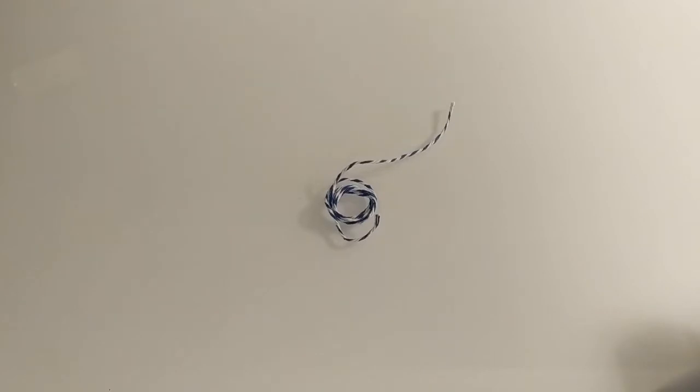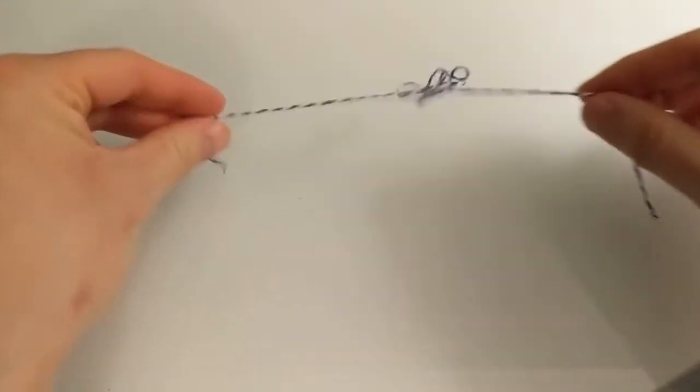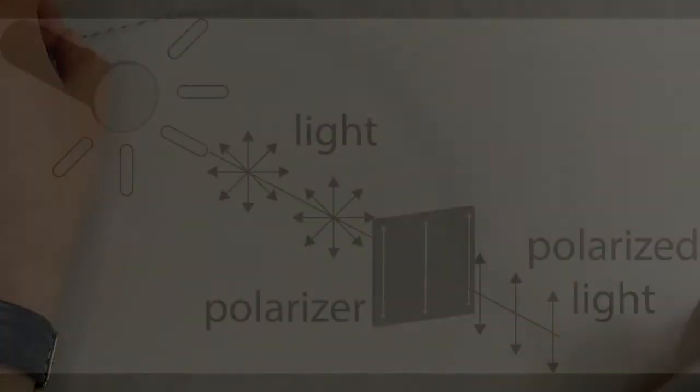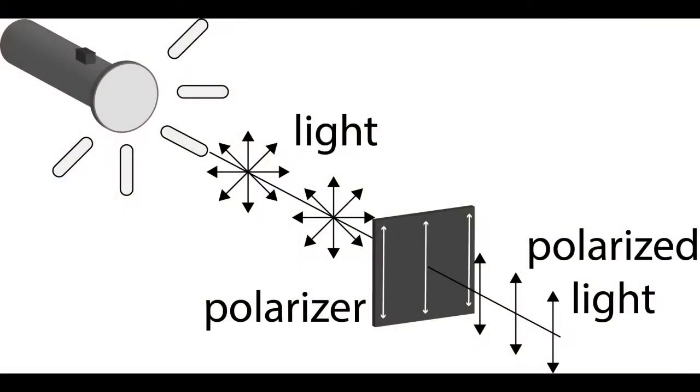Light acts like a wave. You can think of it like a piece of rope or string that's oscillating or wiggling in some direction. Now, most sources of light, the sun, any light bulb, will emit light that is oscillating in all directions.